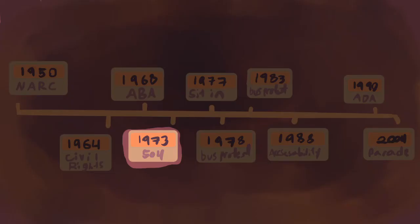In 1973, Section 504 was an anti-discrimination law. It made it so that any program funded by the federal government could not discriminate against disabled people. It had been approved and everything — it just needed definitions and regulations.